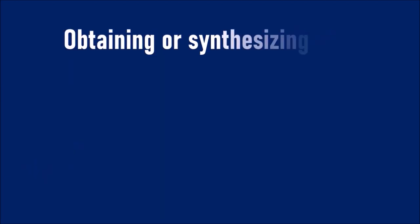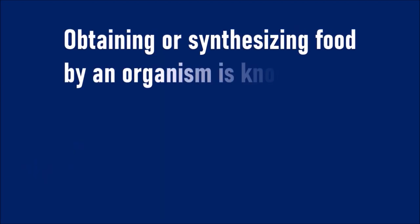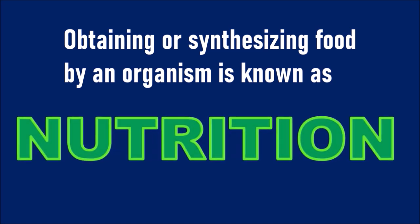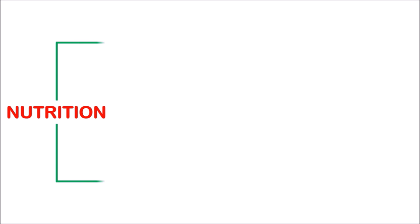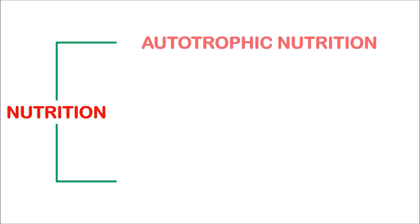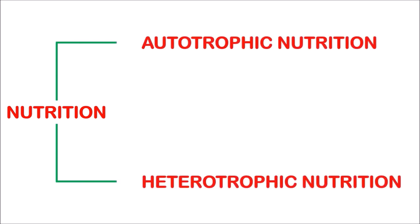Obtaining or synthesizing food by an organism is known as nutrition. Basically, nutrition is of two types: autotrophic nutrition and heterotrophic nutrition.